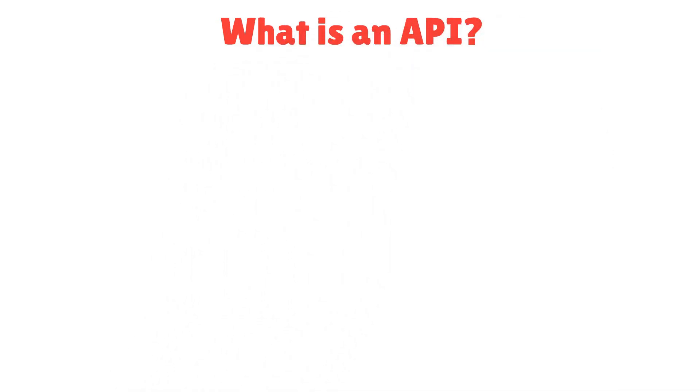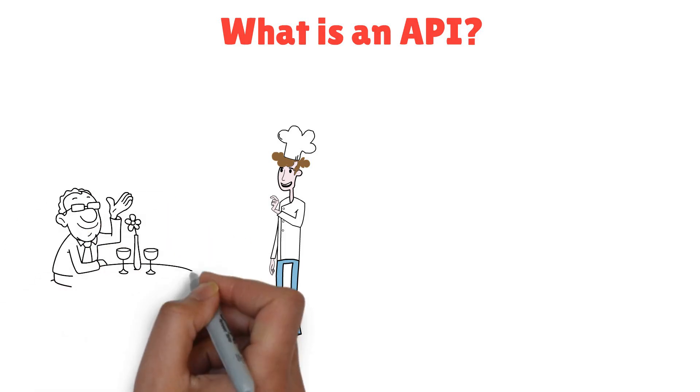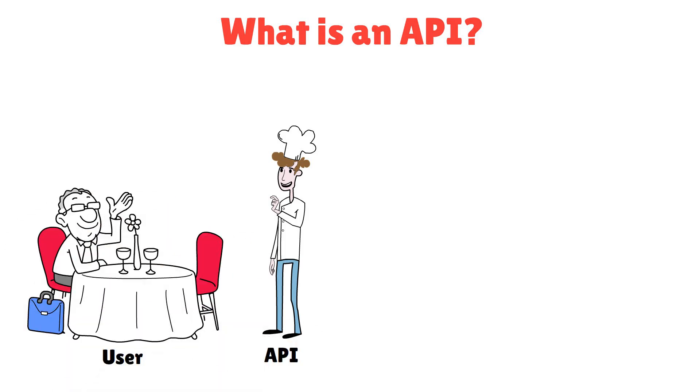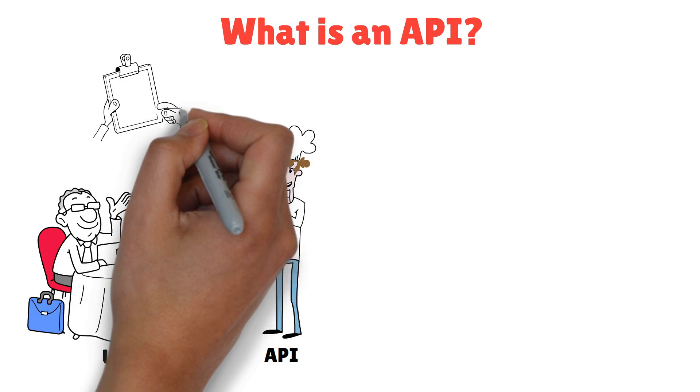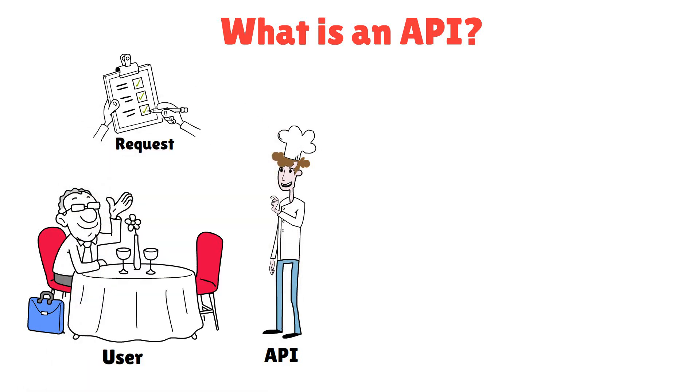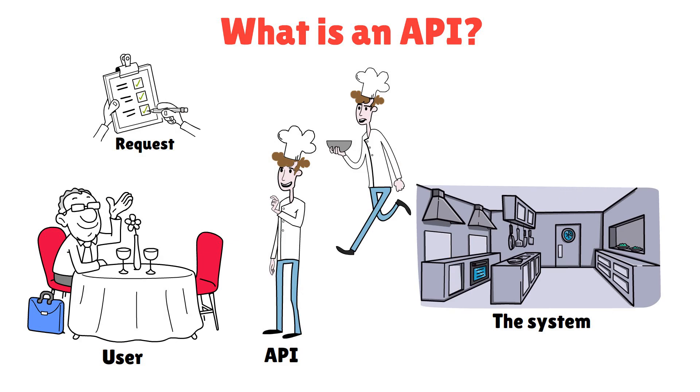Think of an API as the waiter at your favorite restaurant. You, the user, give the waiter, API, your order, request. The waiter takes it to the kitchen, the system, and returns with your food, response. Easy, right?